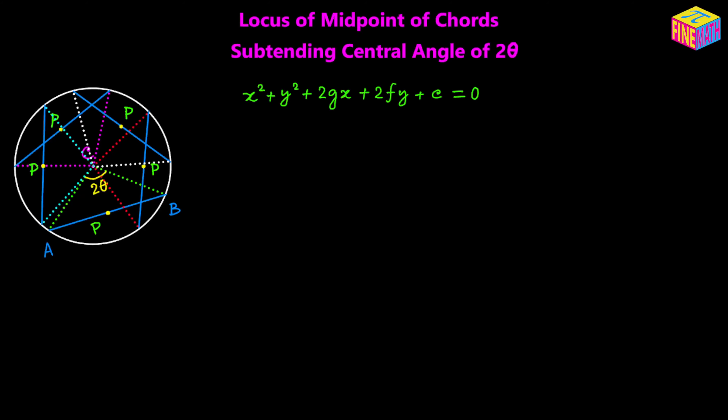We can slowly move this chord inside the circle and there could be infinite number of positions. That means there will be infinite number of positions of the midpoint of this chord. So what would be the locus of the midpoint? Is it going to look like a straight line, a curved line, a circle, ellipse, or parabola?